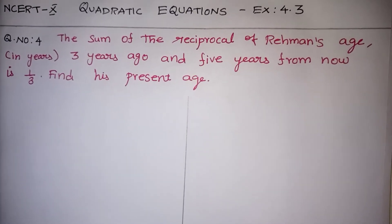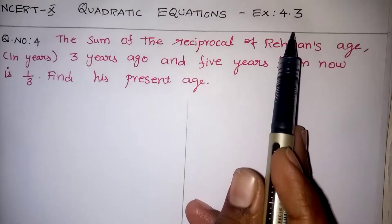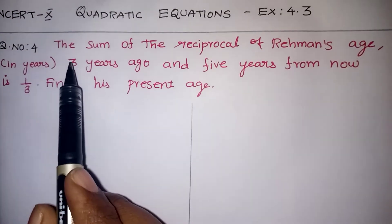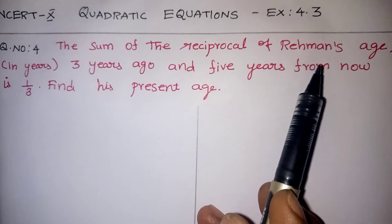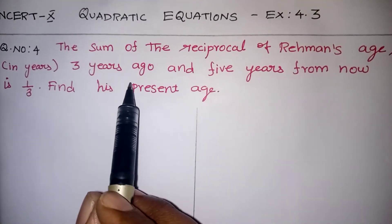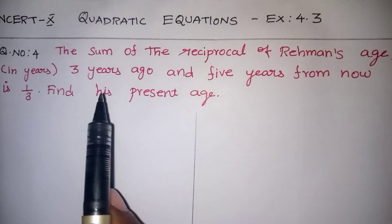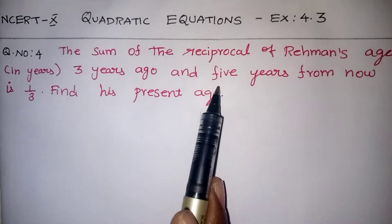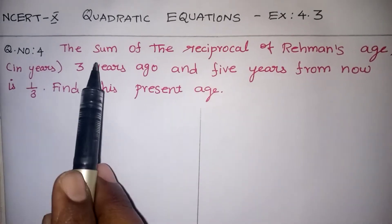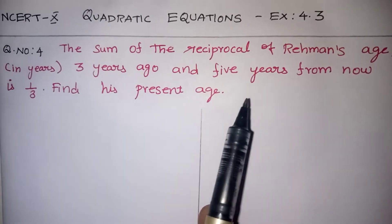Hi students. In this video I am going to explain quadratic equation exercise 4.3 from the 4th problem. The given question is: the sum of the reciprocals of Ragamond's age 3 years ago and 5 years from now is 1 by 3. Find the present age of Ragamond.